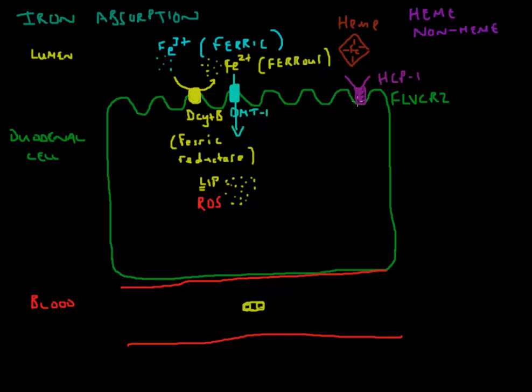The reality is there is some heme carrying protein that gets the heme into the cell. Once inside the cell, this is iron connected to heme. This iron obviously has to be released. There is another enzyme here called heme oxygenase that will release this Fe2+ iron from heme, and this Fe2+ will join the labile iron pool.